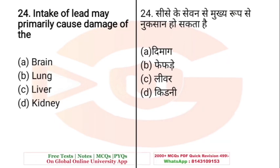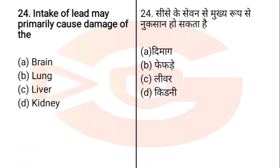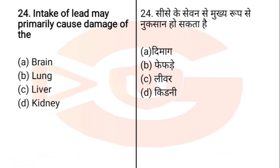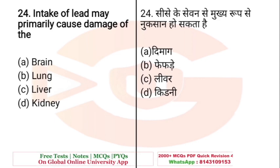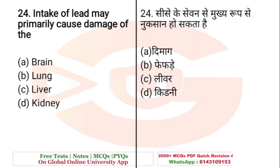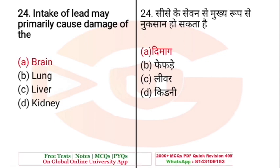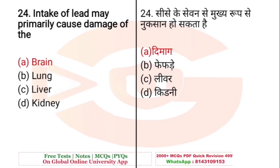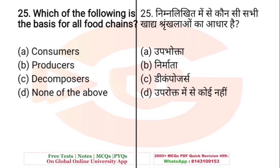Question: Intake of lead may primarily cause damage to the — A. Brain, B. Lung, C. Liver, D. Kidney. The right answer is A — Brain. Lead intake can damage the brain.